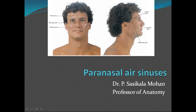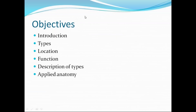The sinuses are arranged in pairs. There are four types of sinuses based on the location of the bone where each is located. We are going to cover this under the headings of introduction, types, location, function, description of each type, and applied anatomy.